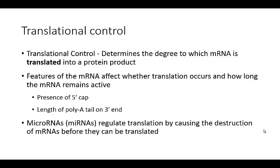We can also talk about regulating gene expression at the level of translation. When we're talking about translational control, we're talking about the degree to which mRNA is being turned into or translated into a protein product. There are certain features present on the mRNA, and these will affect whether or not translation occurs, and if it does, how long that mRNA remains active.